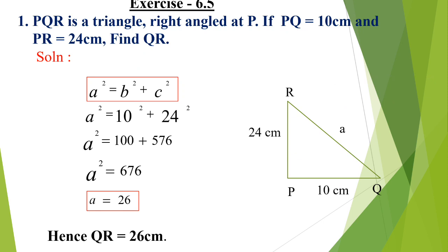Today we have seen: first, the interior-exterior angle property and sum of all angles; second, the Pythagoras property with two model problems — one given as a diagram and one as a statement. Homework is given in all three problems. If you have any doubt, clarify through WhatsApp or by making a call. Thank you, students.